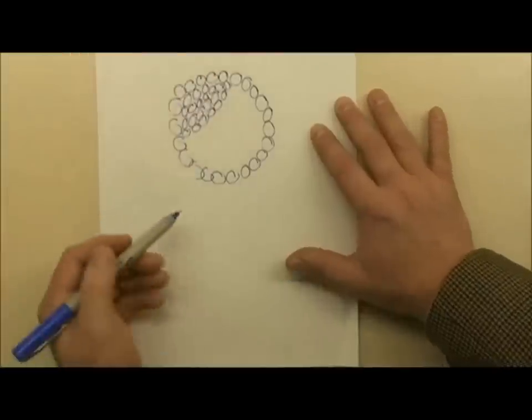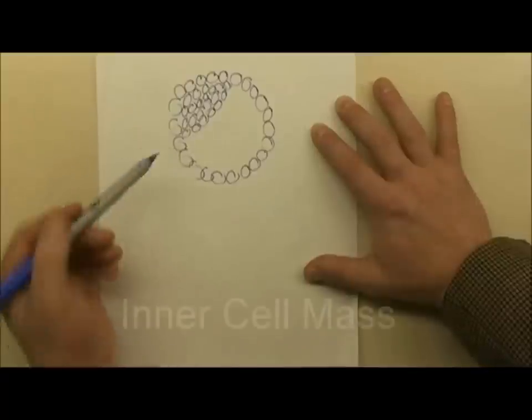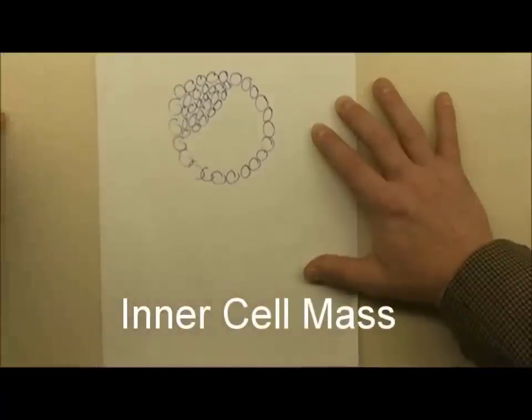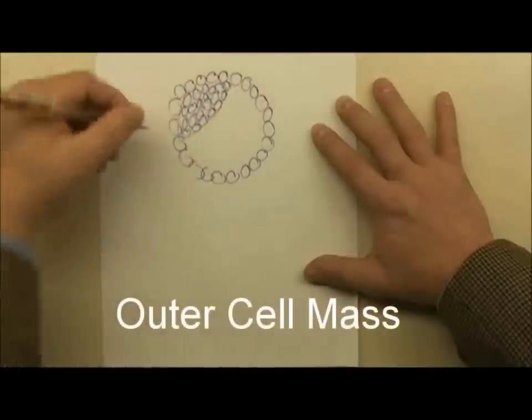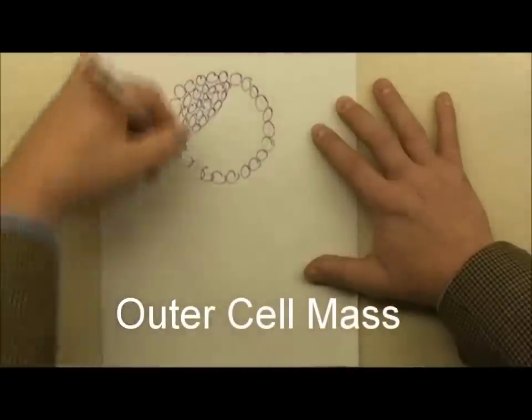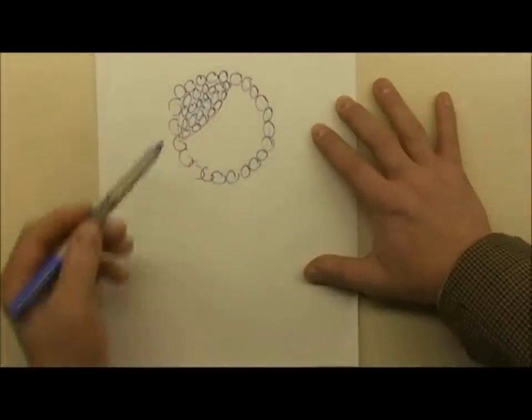And the very appropriately named grouping of these cells is that you have an inner cell mass, shown right here, and an outer cell mass, which is making up the periphery.